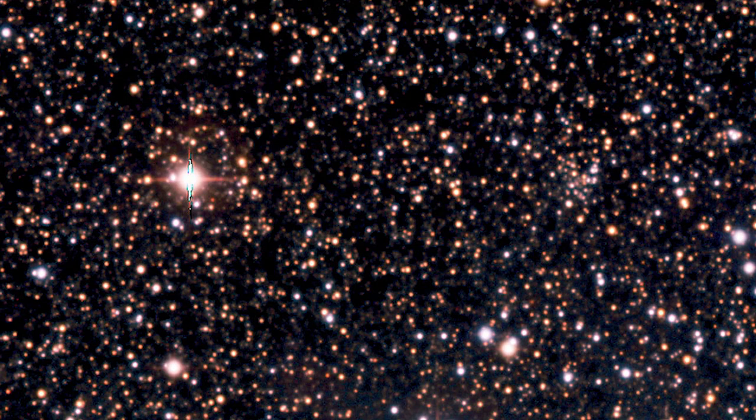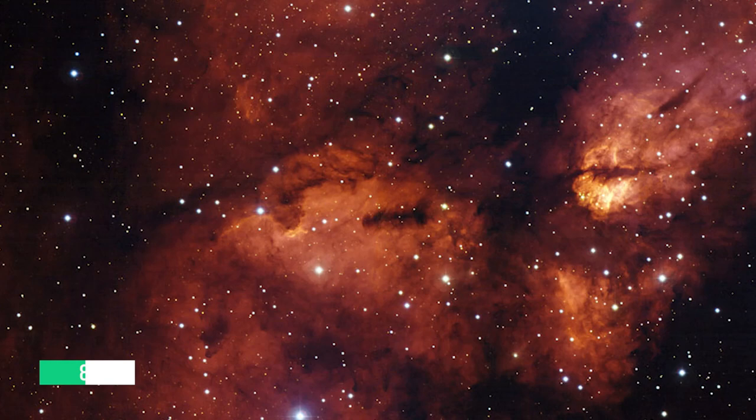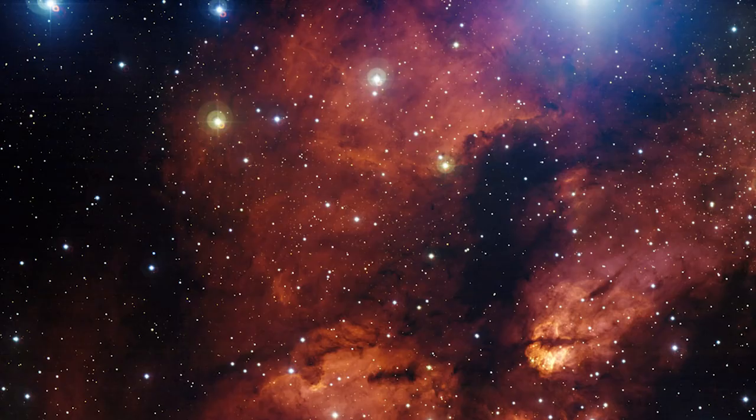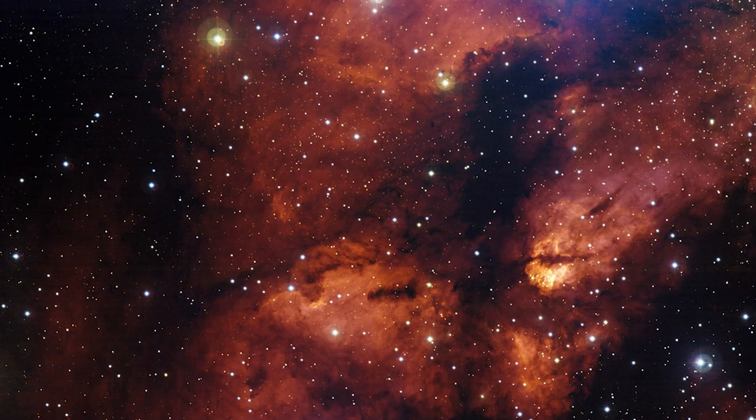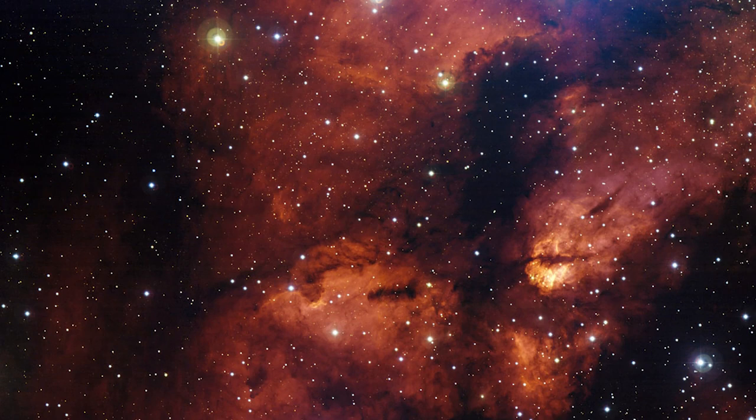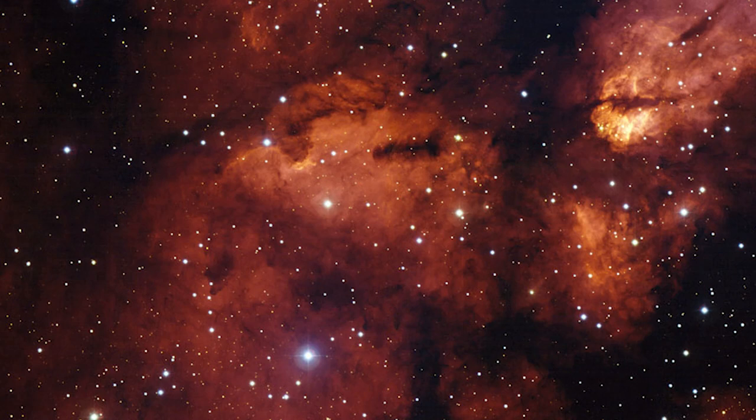Star Cluster RCW38. The larger region that encompasses the star cluster RCW38, which may be found approximately 5,500 light-years away in the direction of the constellation Vela, the sails. A nascent cloud of dust and gas still envelops the stars that make up RCW38, making it what is known as an embedded cluster.